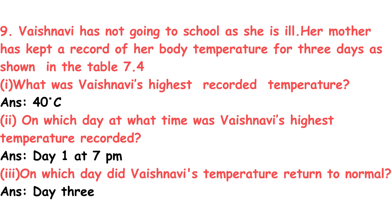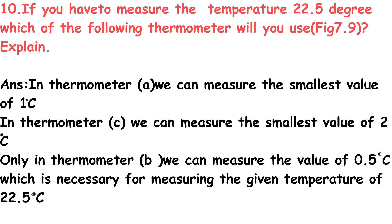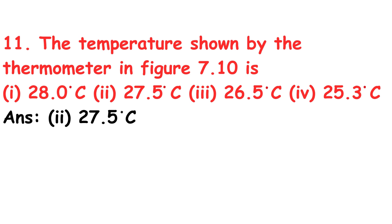Question 10: To measure a temperature of 22.5°C, which thermometer will you use from figure 7.9? Thermometer A measures the smallest value of 1°C. Thermometer C measures the smallest value of 2°C. Thermometer B can measure 0.5°C, which is necessary for measuring 22.5°C — so Thermometer B is the answer.